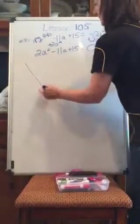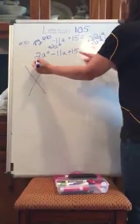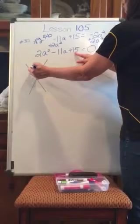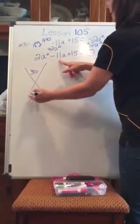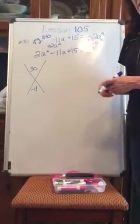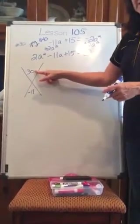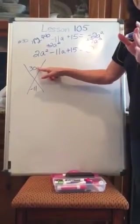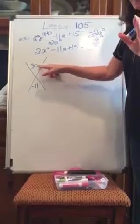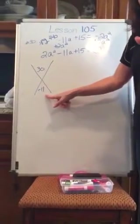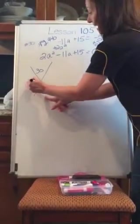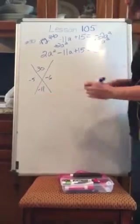All right. A times c up top, 2 times 15 is 30, and b is negative 11. Now, I want factors of 30 such that if I multiply them, I get a positive 30. I add them, I get a negative 11. It's going to be negative 5 and negative 6.